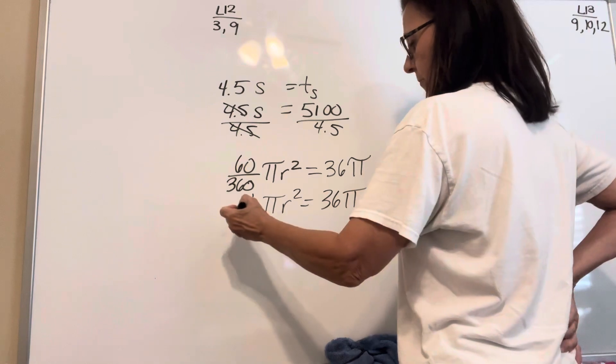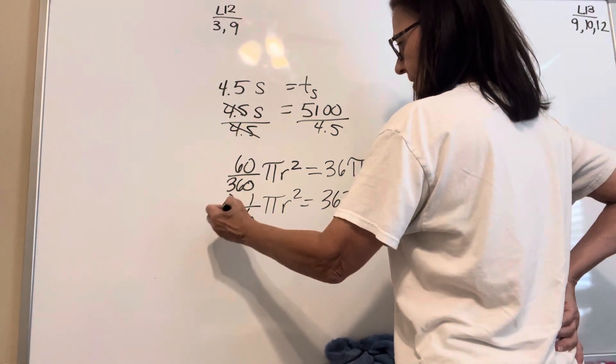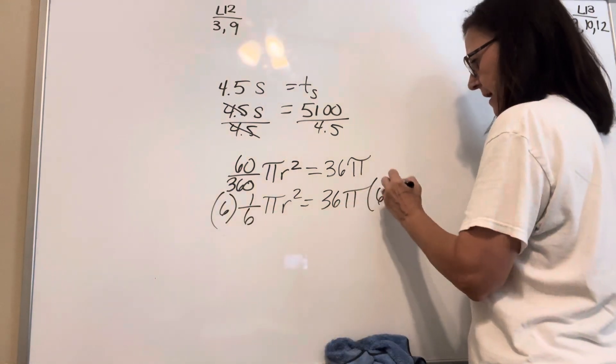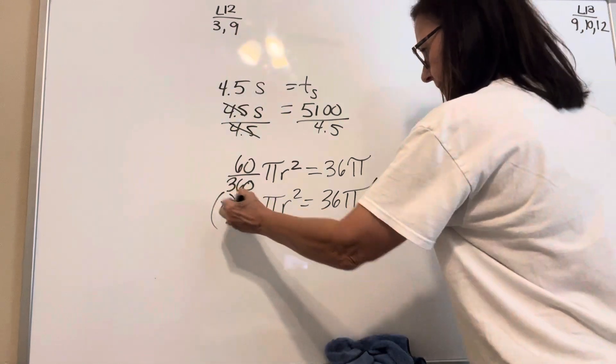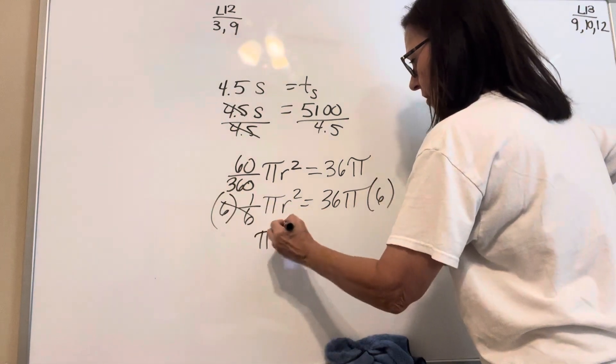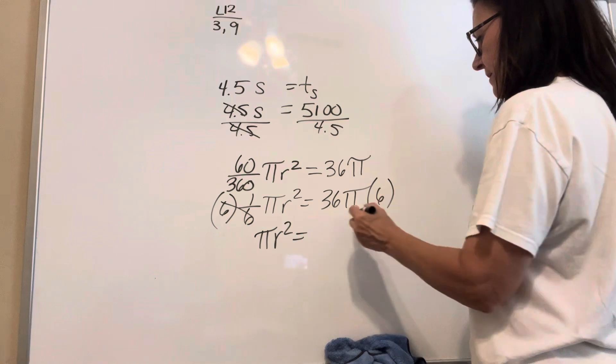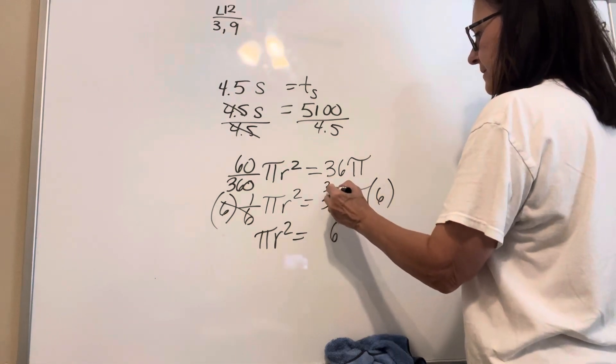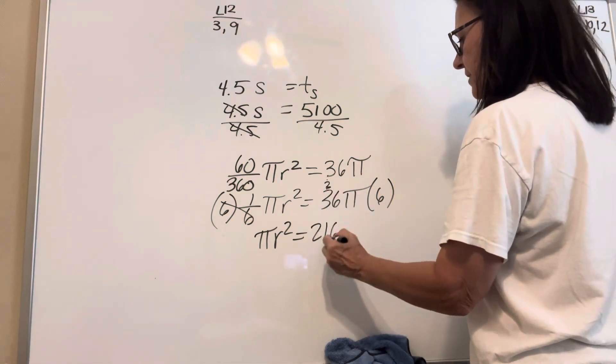So that's 1 sixth pi r squared equals 36 pi. So the first thing, I would multiply by 6 on both sides. So that we're left with pi r squared is—that's 36, that's 18, 19, 20, 21, 2—216 pi.